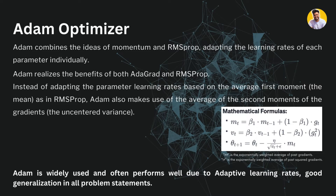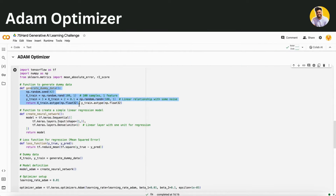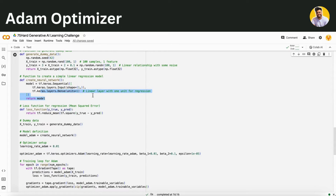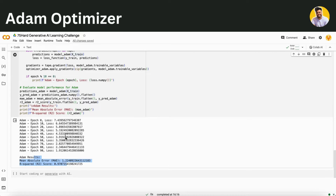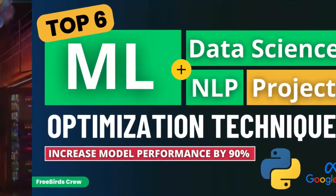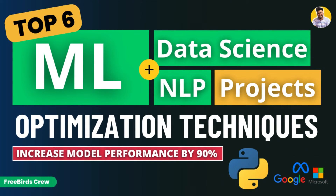Let me show you the actual use case of the Adam optimizer. Using the same dummy data and neural network setup, when we run it with Adam, you can see it achieves 97% R-squared — a much better result than SGD's 40%. Now you completely understand the top two optimizers used in large language models. If you want to learn about more optimization techniques for data science, ML, or NLP projects, you can watch the linked video on the top six optimization techniques that can increase your model performance by 90%.